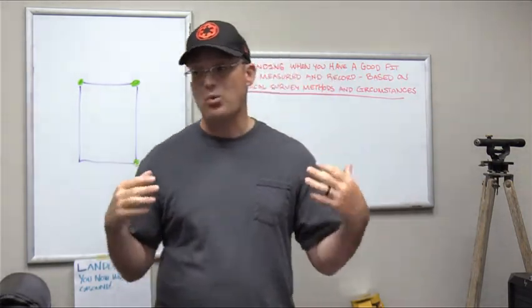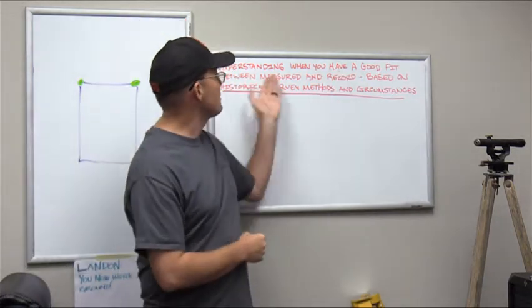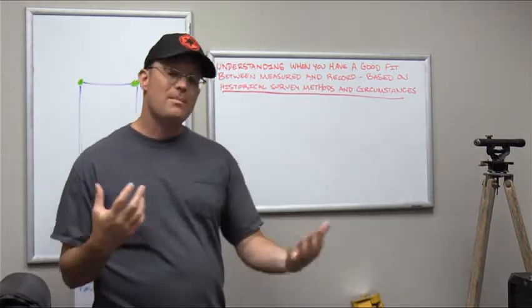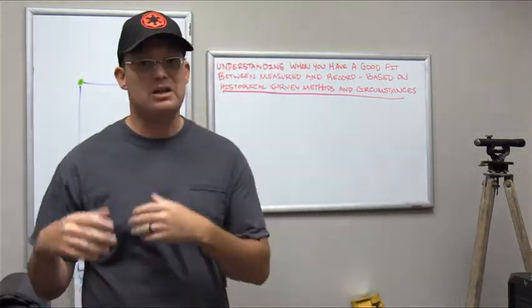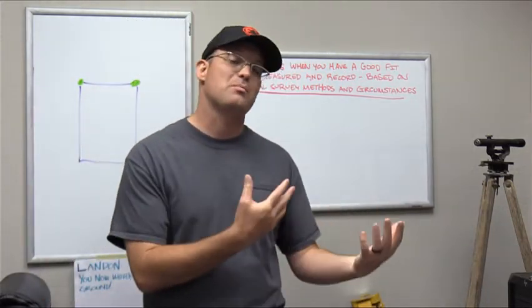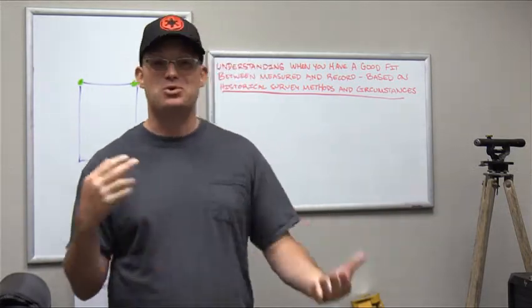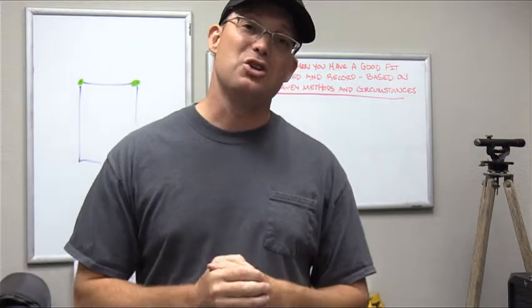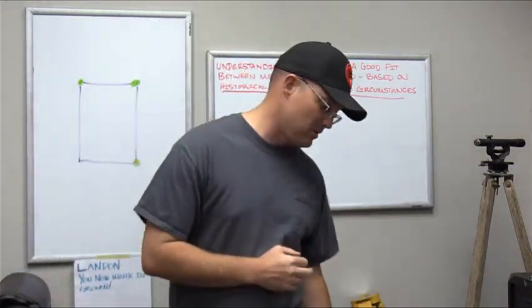What is a record bearing and distance, a record value? If we talk about a record value, that's just a value that comes from another survey. Typically a historical survey, a survey that was done prior to you, usually it's done by another surveyor. Sometimes you might be retracing your own work and then you're going to be the one that did the record. But in most cases, we're talking about measurements made by another surveyor.